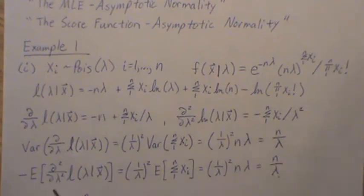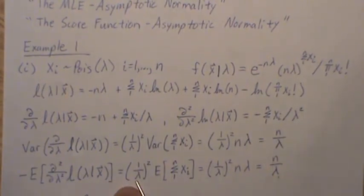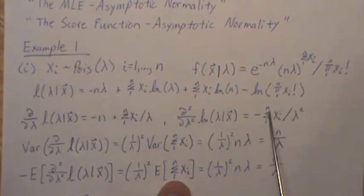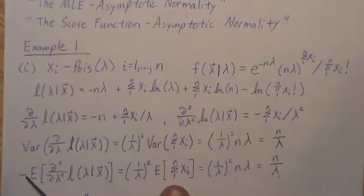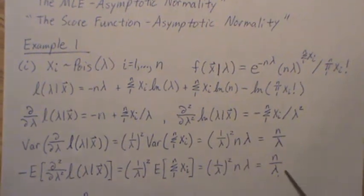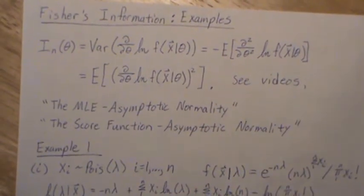Now to use another formula, let's take the negative expected value of the second derivative. We plug that in, the lambda squared comes out, and the expectation goes right into the sum. Notice the two negatives cancel. The expected value of xi is lambda, so we get n times lambda, and the lambda cancels to give n over lambda.